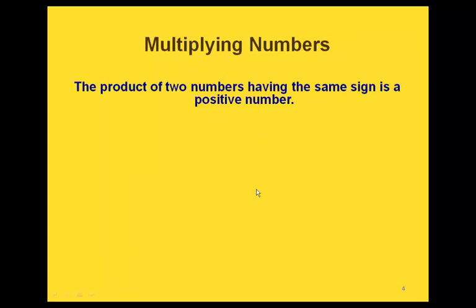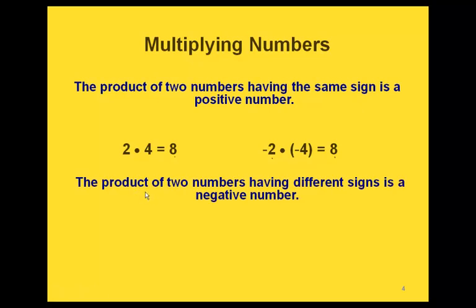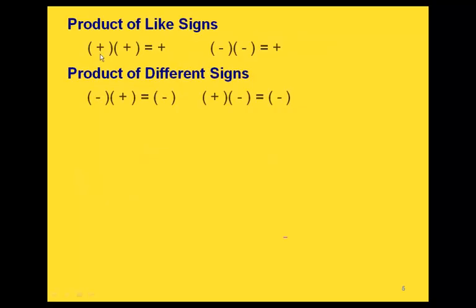In general, if we're multiplying two numbers that have the same sign we get a positive number. We already know two positives give a positive, and we just found two negatives give a positive. If we're multiplying two numbers with different signs we get a negative. So 2 times negative 4 is negative 8, and negative 2 times positive 4 is also negative 8. A plus times a plus is a plus, a minus times a minus is a plus, but a minus times a plus or a plus times a minus each gives a minus.